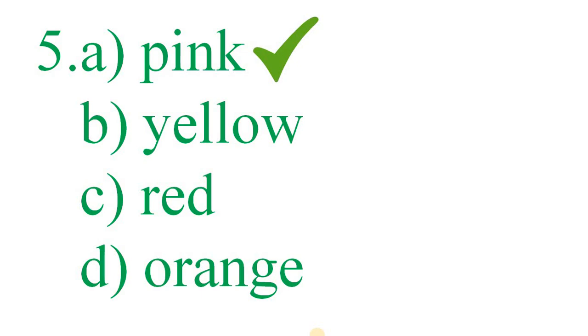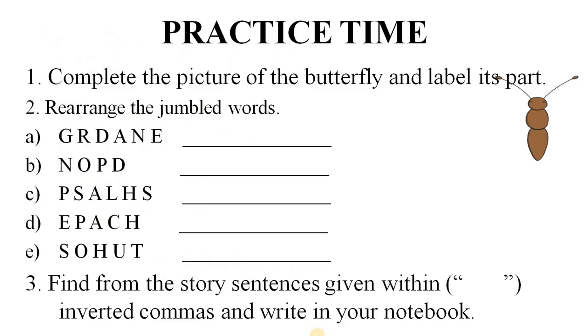Today we have learnt the second part of the yellow butterfly and done question answers. Now it's practice time. Question number 1: Complete the picture of the butterfly and label its parts. Question number 2: Rearrange the jumbled words. Question number 3: Find from the story sentences given within inverted commas and write in your notebook. So kids, that's it for today. Again we will meet in the next video. Thank you. Bye.